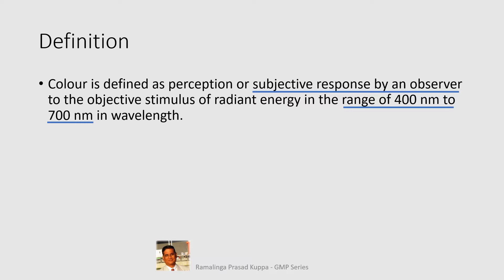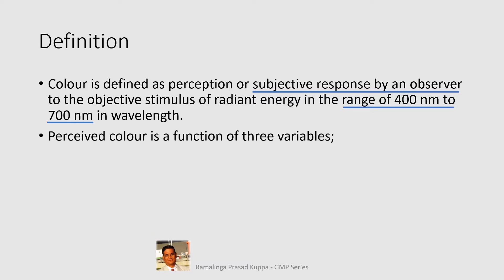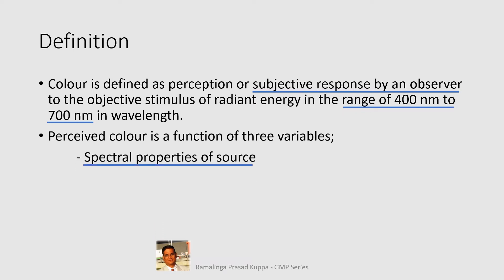This range of colors is visible to the human eye. Perceived color is a function of three variables. The ability of the human eye to identify colors depends on these factors. First, the spectral properties of the source — how the source of light and its intensity falls on the object plays a role in color perception.